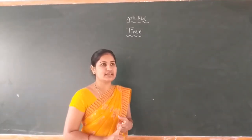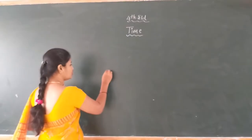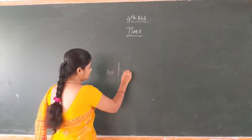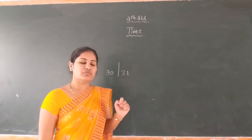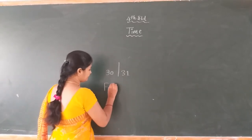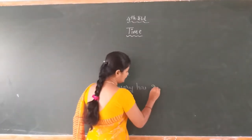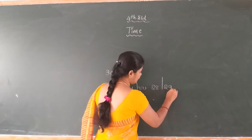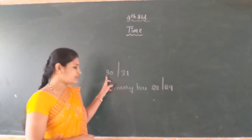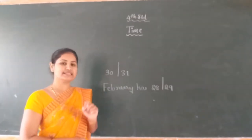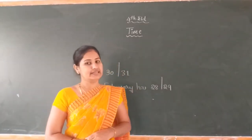Dear student, 30 or 31 days are present in a month. You already learnt that 30 or 31 days are present in 1 month. But February has only 28 or 29 days. The remaining months have 30 or 31 days, but only February has 28 or 29 days.